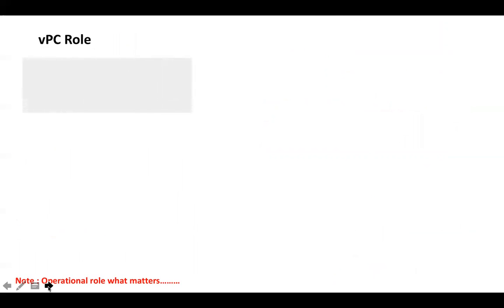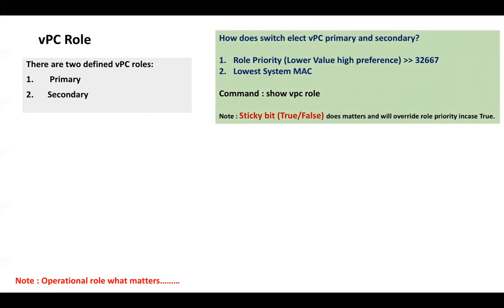Now let's discuss VPC roles. There are two defined VPC roles: primary and secondary. The VPC primary switch is responsible for processing STP BPDUs and ARP. Apart from processing STP BPDUs or ARP, it plays a very important role when there is a failure in the VPC network — for example, if the peer link goes down. VPC primary and secondary are elected based on role priority. If there is a tie, they are elected based on lowest system MAC address.